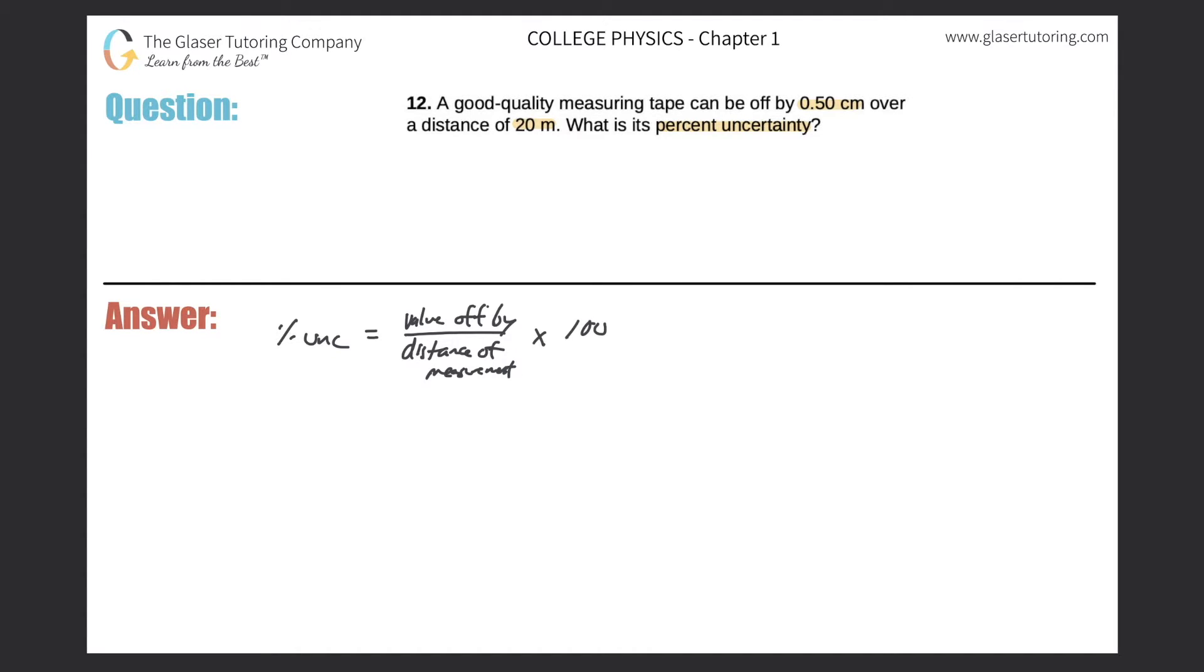So that's a fairly—you're not going to see this formula written in this way in the textbooks, by the way. This is a commonsensical formula. Think about percent uncertainty as the value that the measurement is off by, divided by the total distance of the measurement that was taken, and then multiply that by 100.